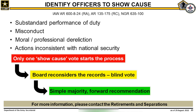In accordance with Army Regulations 600-8-24 for active component, 135-175 for reserve component, and National Guard Regulations 635-100, the criteria to evaluate a candidate's performance includes, but is not limited to, substandard performance, misconduct, moral or professional dereliction, and actions inconsistent with national security. Candidates who receive a show cause recommendation are then reconsidered by the Board through a yes or no vote. If a majority of the Board members vote yes, meaning they recommend a candidate show cause, the recommendation is forwarded for further action by their appropriate commander.